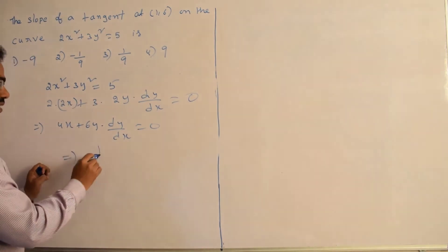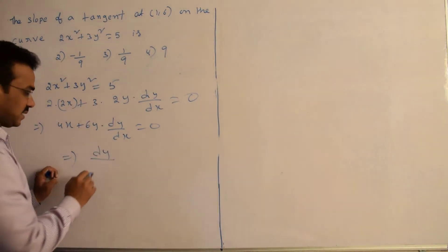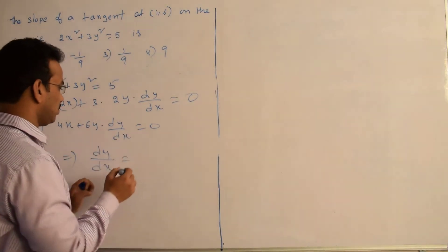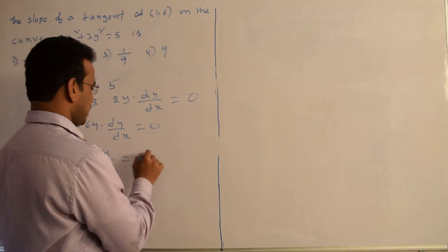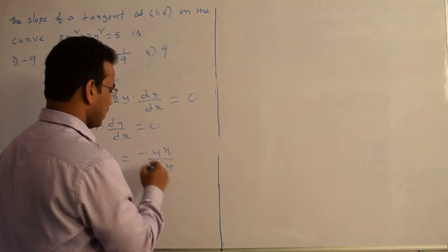Directly writing dy by dx: dy by dx equals minus 4x divided by 6y.